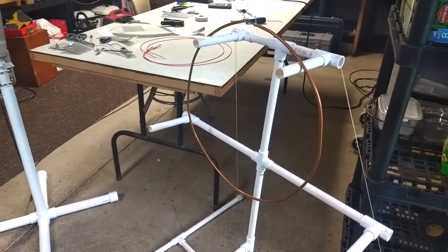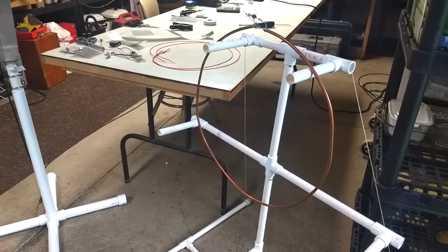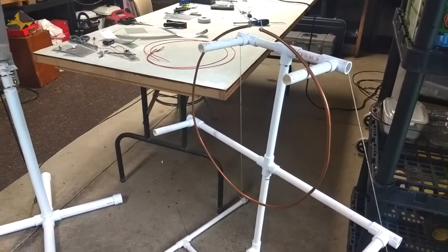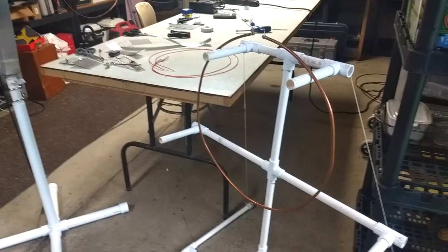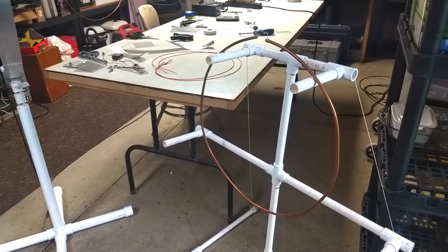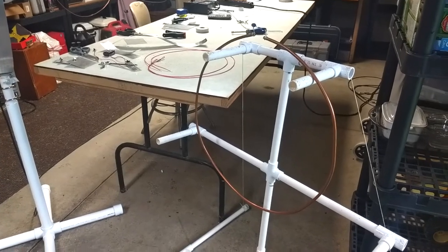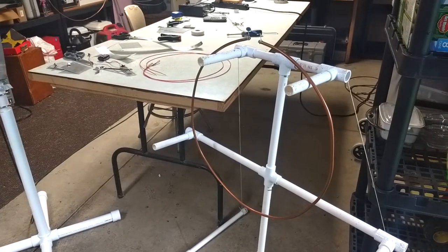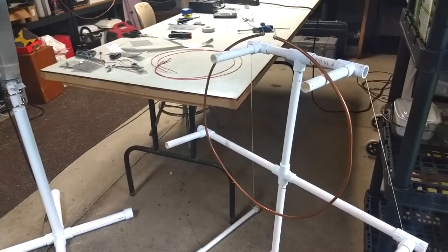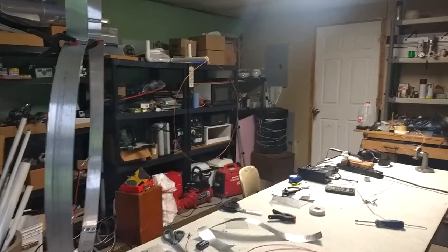Well, I've started experimenting with loops in order to learn about mag loop antennas, and this is a five-foot loop made of quarter-inch copper tubing, and across the room there